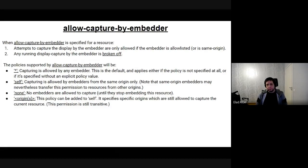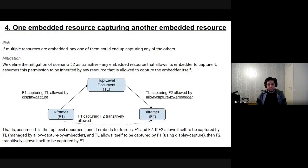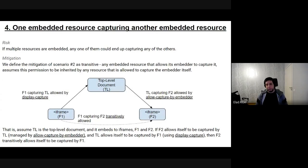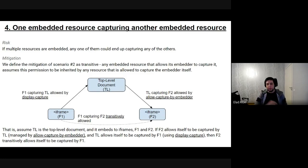And the last thing is for one iframe capturing another — we handle this transitively. So if I embed two things and one of them allowed me to capture it and I allow the other one to capture me, then there is a chain and they can capture each other, at least in one direction, maybe not the other. That's the proposal — if anyone would like, I can go into details about any part of this. But first, maybe there are some thoughts.